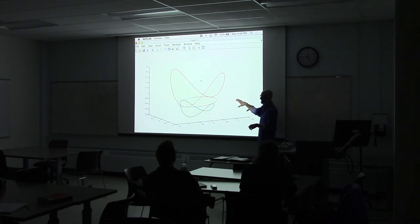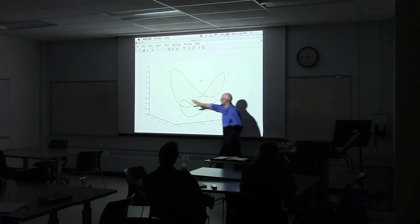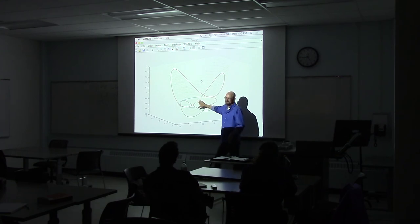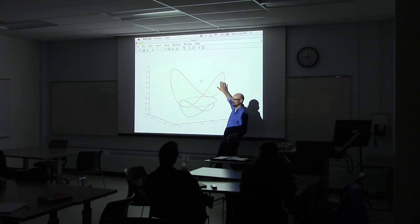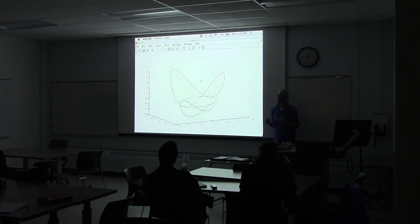So sometimes you get V dot being less than zero out here, but not inside. And then sometimes it's the other way around. Sometimes you get V dot less than zero in here, but not out here. So it can be like two totally different things.